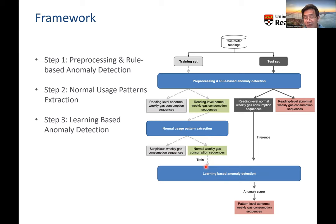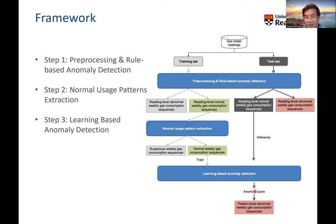The left-hand side is the training path and the right-hand side is the test path. Once we have test data, we can do preprocessing and rule-based anomaly detection, removing reading-level abnormal weekly data sequences. Then we feed the normal weekly gas consumption sequences into the machine learning models, and based on the output we can detect if there is any anomaly. This is our framework.